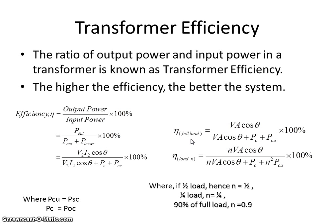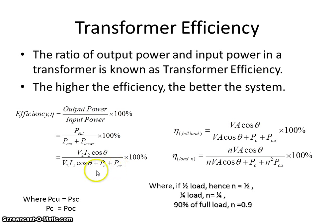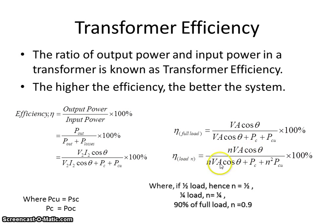Coming to transformer efficiency: the ratio of output power to input power in a transformer is known as transformer efficiency. The higher the efficiency, the better the system. The efficiency formula is output power divided by input power, expressed as a percentage: η = P_out / (P_out + losses) × 100%. That is, η = V2·I2·cosθ / (V2·I2·cosθ + PC + PCU) × 100%, where PC is the core loss and PCU is the copper loss. Full load efficiency: η = VA·cosθ / (VA·cosθ + PC + PCU). Efficiency at partial load: η = N·VA·cosθ / (N·VA·cosθ + PC + N²·PCU).